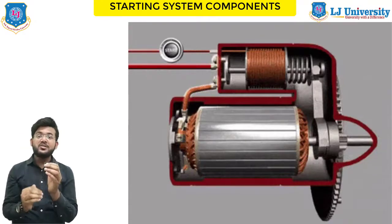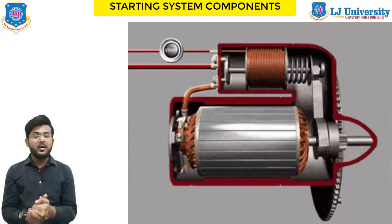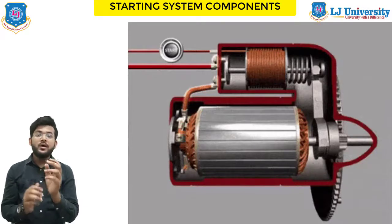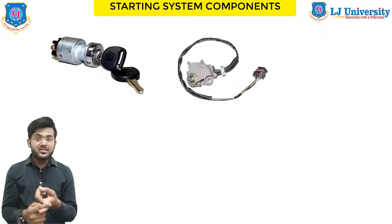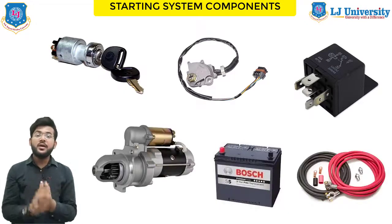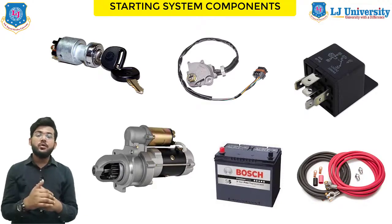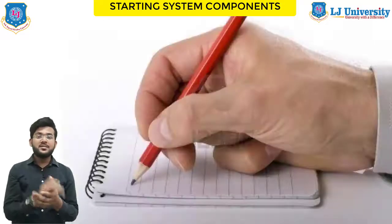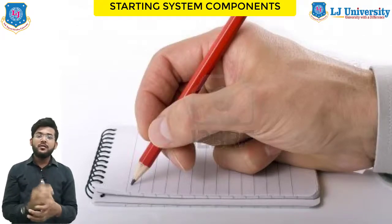Those were the main components used in a starting system, each with its own function. The components are: the battery, battery cables, ignition switch, neutral safety switch, starter relay, and starter motor. In the next session we will discuss the working of the starter motor and more about the starting system. If you have any queries, write them in the comment section and I will try to solve them as soon as possible. Thanks for watching — keep learning, goodbye.